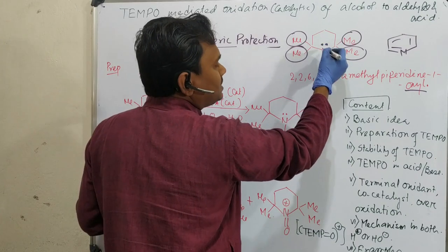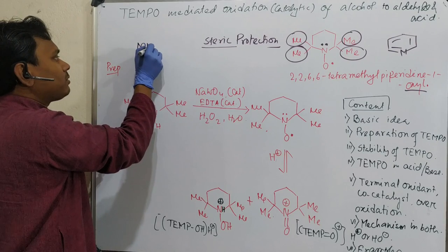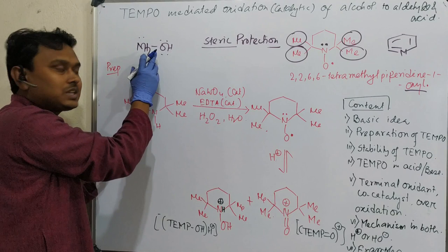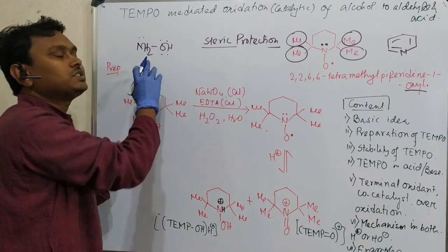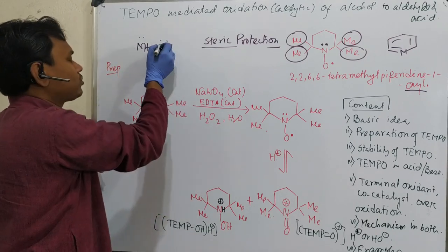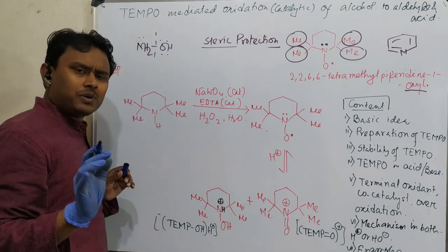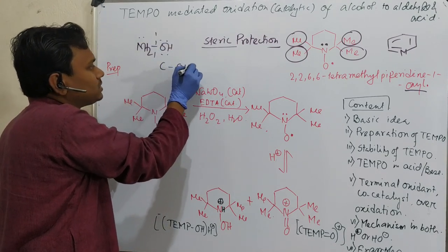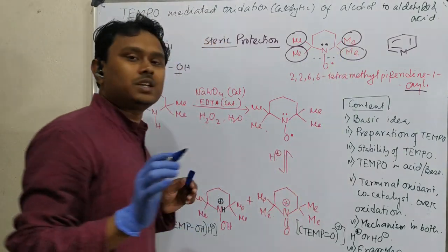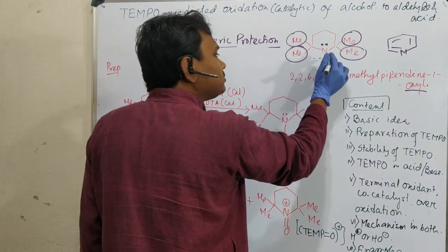And why this is stable? It is stable because of steric protection. Two types of stability factors could be possible: one is stability because of steric hindrance and stability because of electronic property. This is primarily steric hindrance. As you can see, this molecule contains a nitrogen-oxygen bond.